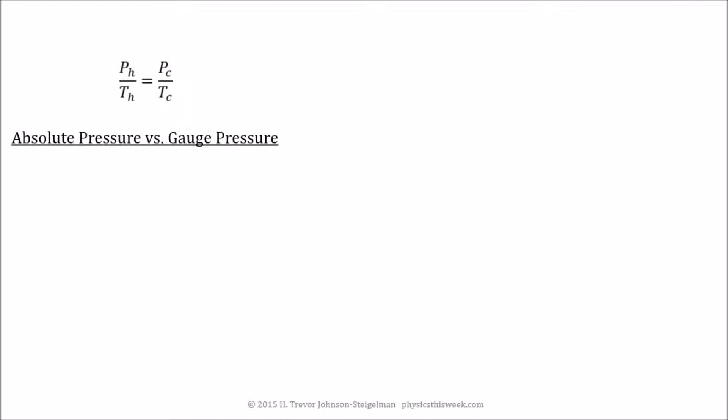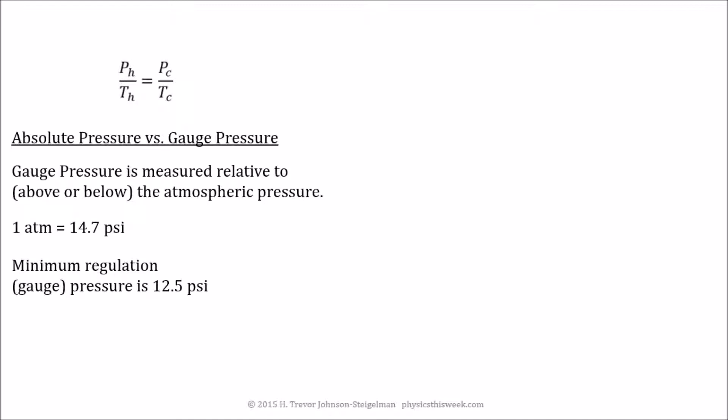Let's talk about absolute pressure versus gauge pressure. Gauge pressure is actually measured relative to the atmospheric pressure, either above or below atmospheric pressure. If you have a football that has zero pressure, it means it's actually at atmospheric pressure inside and not above. Now one atmosphere is about 14.7 pounds per square inch. And if you have a regulation football, the minimum pressure is actually about 12.5 psi. So you can see on the face of this, unless you're talking about that gauge pressure, this value of 12 psi doesn't really make any sense. So what we actually do is we take these two and add them together. The absolute pressure is atmospheric pressure plus the gauge pressure, which in this case is about 27.2 psi.